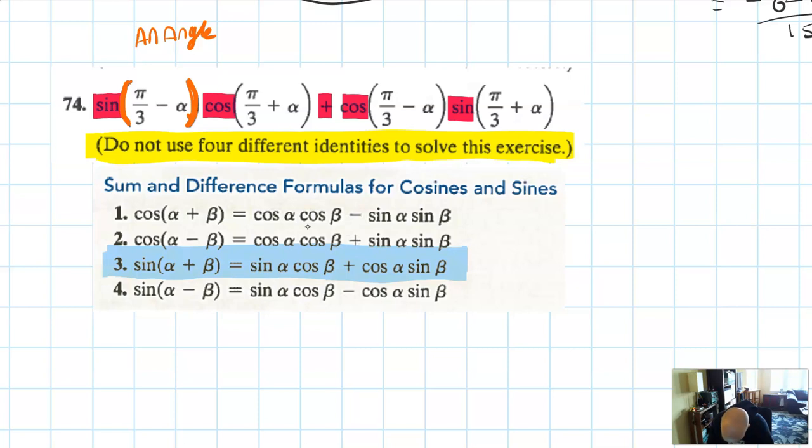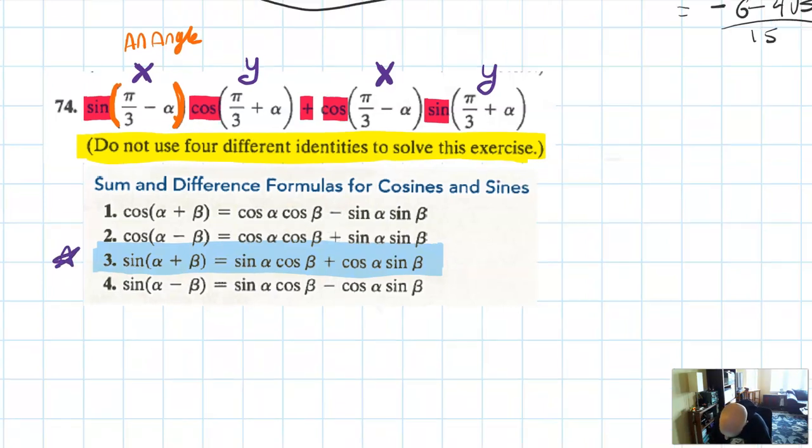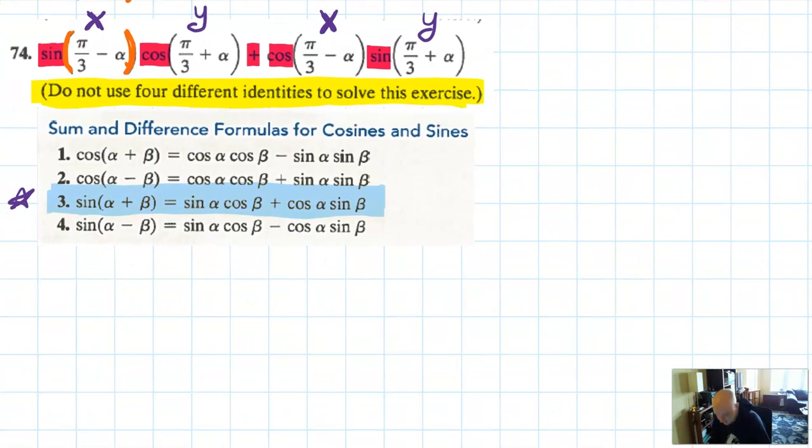Here I have π over three minus α again, that's like angle x. And here I have π over three plus α, that's like angle y. So I do actually have the exact same form as identity number three. Do you guys see it? If you're not seeing it, just pause the video and stare at this for long enough, and you will actually see that structure unveil itself.